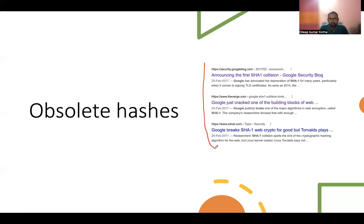For example, this is an announcement you may have already seen: in 2017, Google announced that it had found a way to break SHA-1. It was assumed that it is impossible, within a meaningful period of time using existing computing power, to achieve a SHA-1 collision — meaning get two strings to have the same SHA-1 value. But Google found a way that, given a PDF document, they could modify it such that a SHA-1 collision is produced. So SHA-1 is now obsolete and no one is using it. The minimum recommended is SHA-256, which is 256-bit, while SHA-1 is 160-bit.